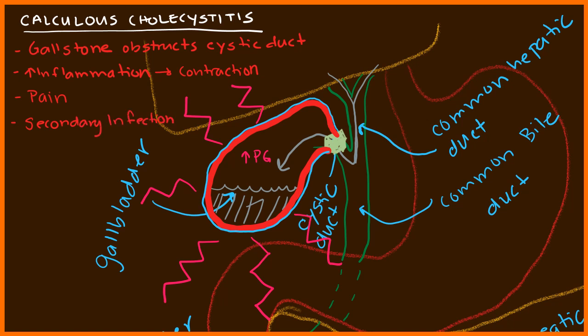You can also have a secondary infection. Once you have inflammation, local bacteria can start to proliferate, leading to a secondary infection in the gallbladder itself. The gallstone can also lodge further down into the common bile duct. When it's in the common bile duct rather than the cystic duct, this is no longer called cholecystitis — it's called choledocholithiasis, meaning a stone in the common bile duct. That condition is treated differently, and there's an important distinction between the two.